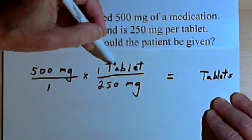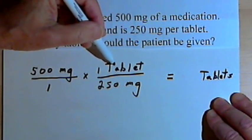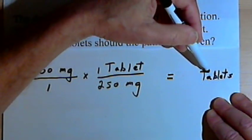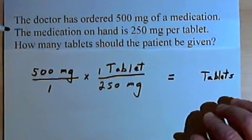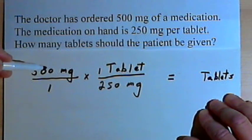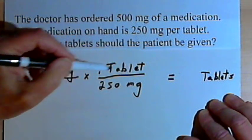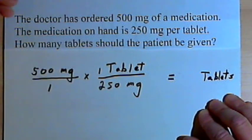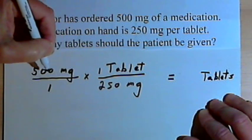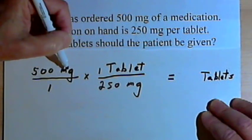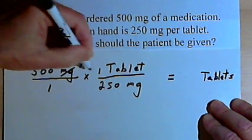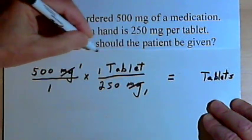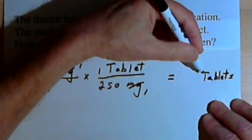I put tablets into the numerator of the fraction I made because I want to end up with tablets in my answer. There's another rule about fractions: when we multiply fractions, we can simplify things first. If we have the same number or the same unit in a numerator and a denominator, we can cancel them out. So I'm going to cancel out the milligrams. The only unit I'm left with is tablets, and that's what I want to end up with.